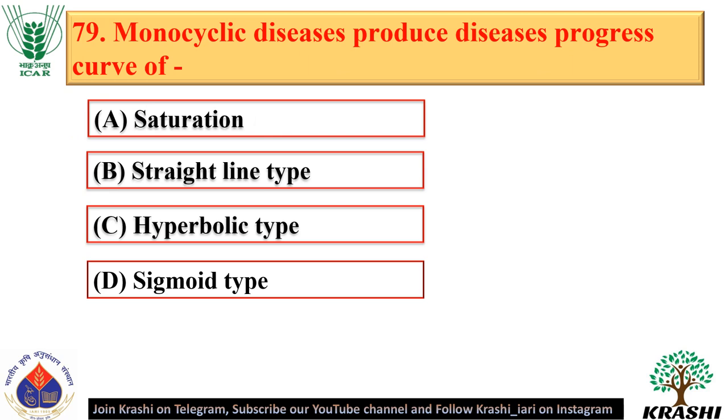Question number 79. Monocyclic diseases produce a disease progress curve of the saturation type — option A.